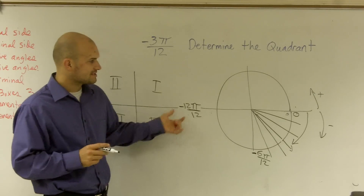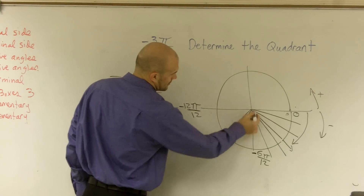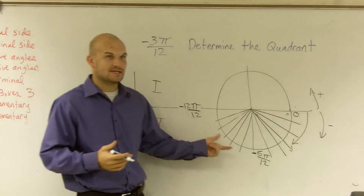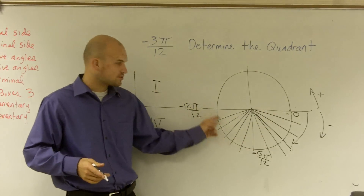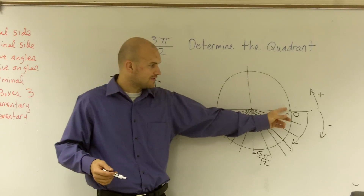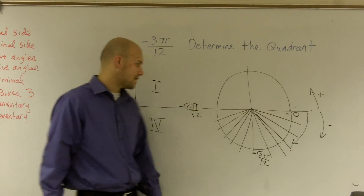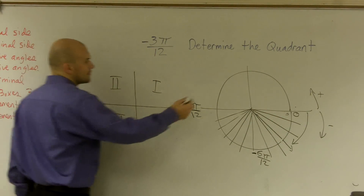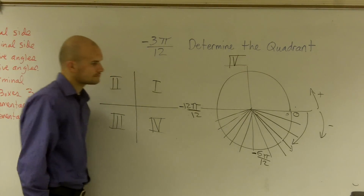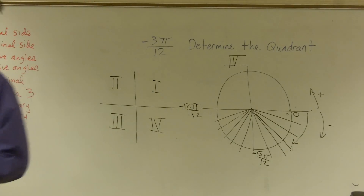You guys see how I segmented this in 12s? So therefore, if I go into three 12ths, it would be 1, 2, 3 — which would be right there. That's my angle. So obviously, what quadrant is that in? Four. So the quadrant is still the same even if you go backwards? Yep.